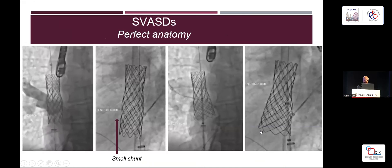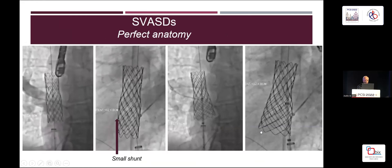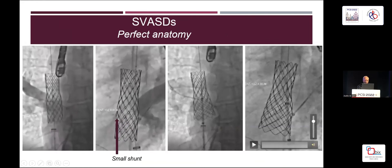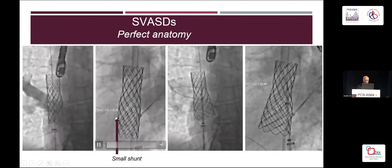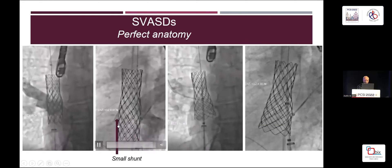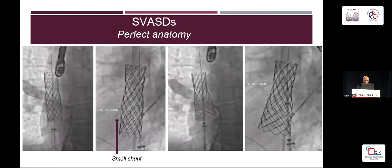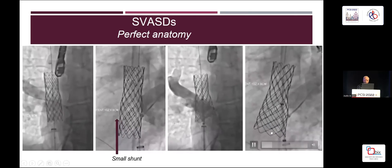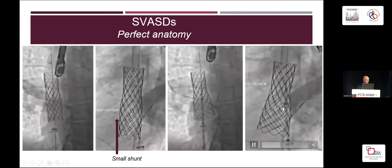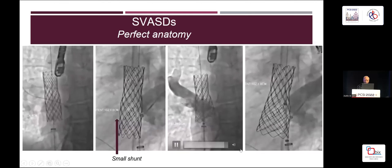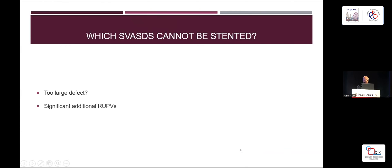Here's a stent in place with a very small residual shunt. You can then try to flare the bottom end, which should abolish the left-to-right shunt and maintain patency of the pulmonary vein.